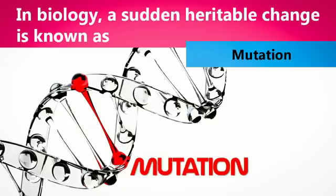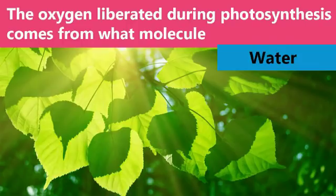Third question: In biology, a sudden heritable change is known as what? The answer is mutation. A mutation is a change that occurs in our DNA sequence.